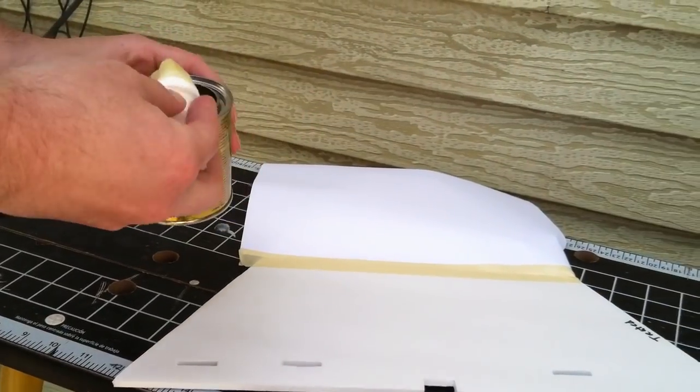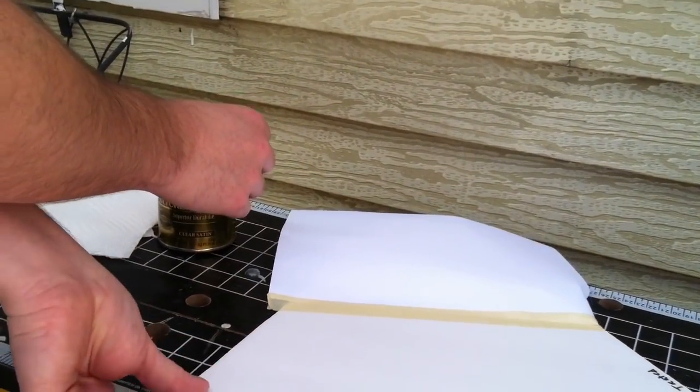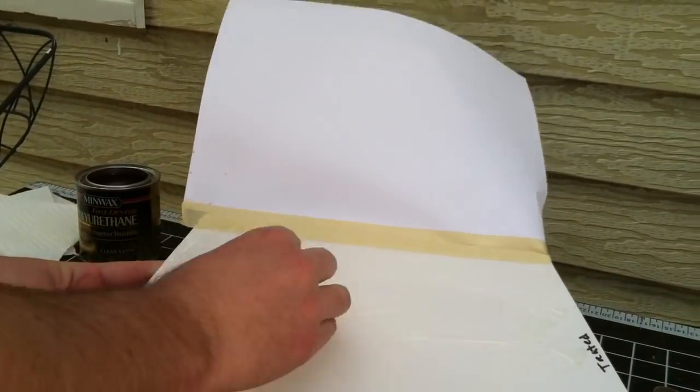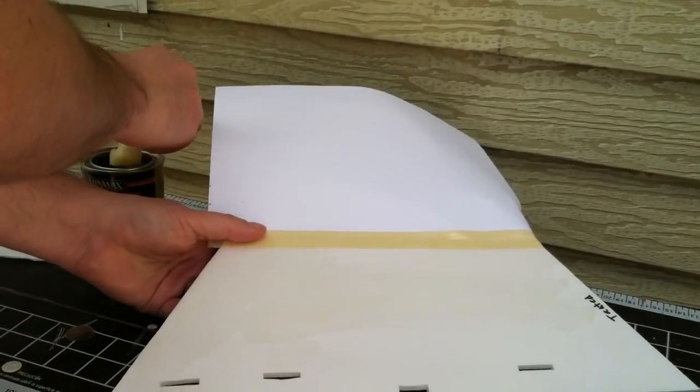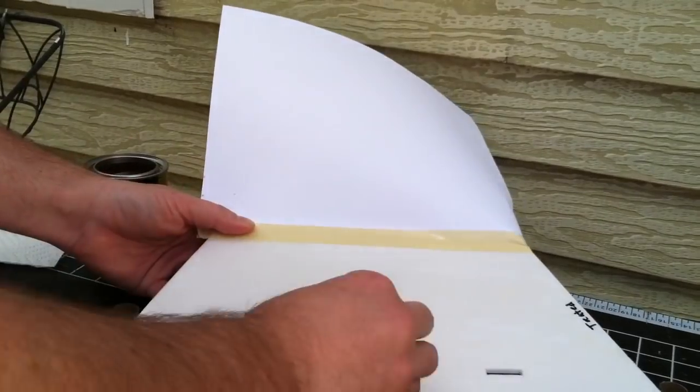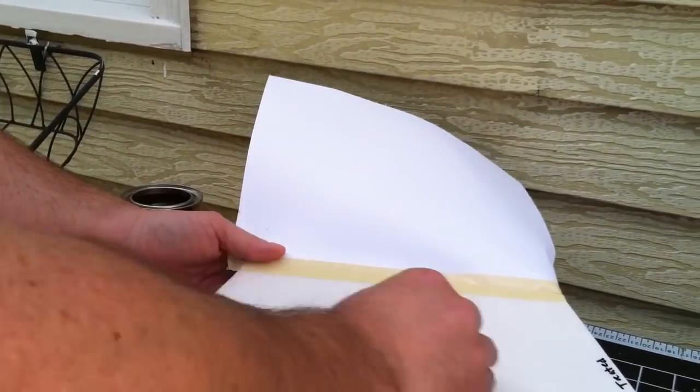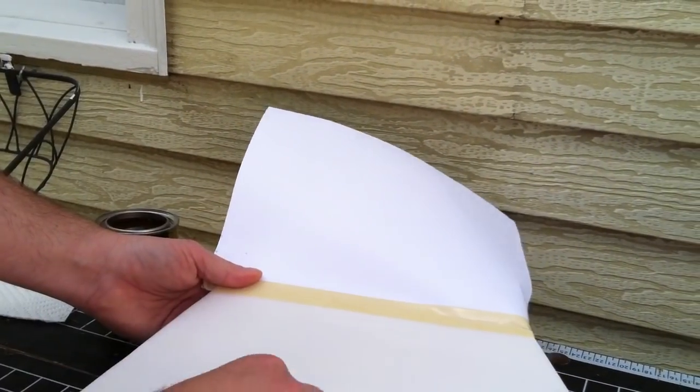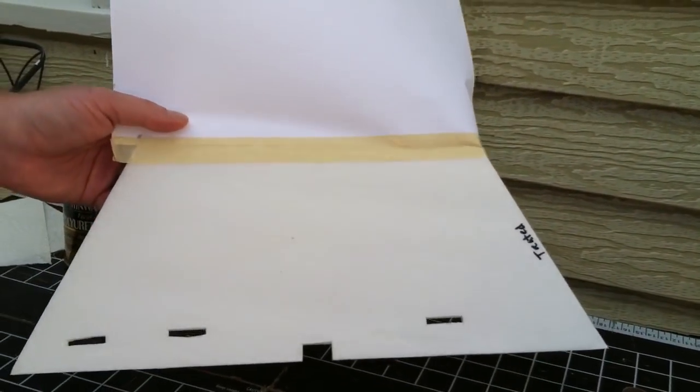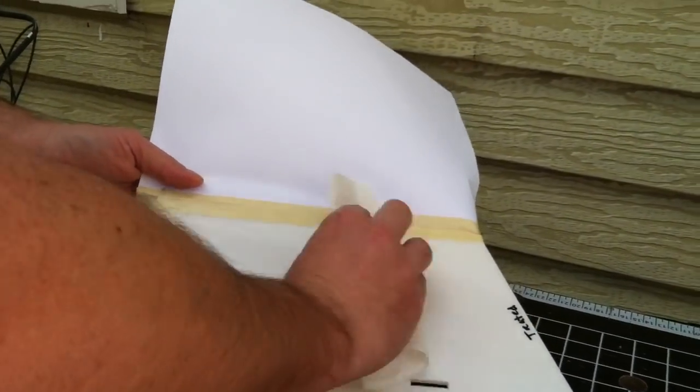I've masked off one side so we can see treated versus untreated. I'm just brushing this on liberally so the whole thing is coated. You can see there's a little bit of excess on the surface.